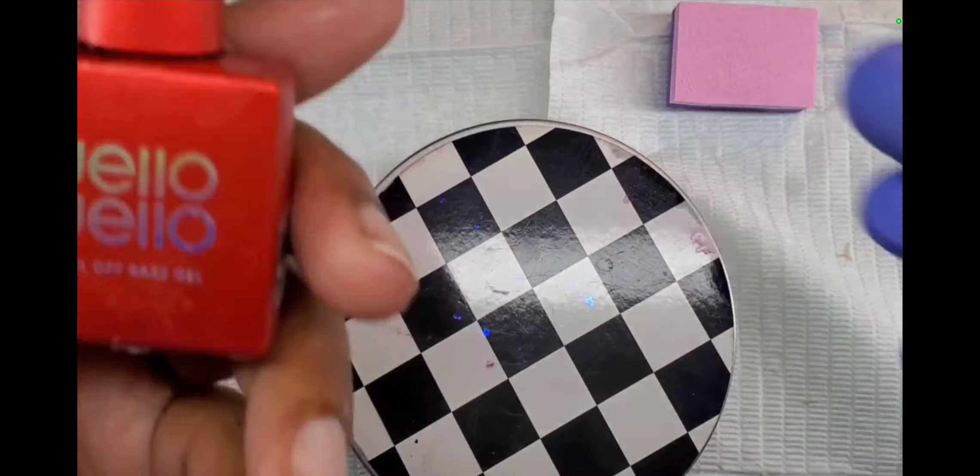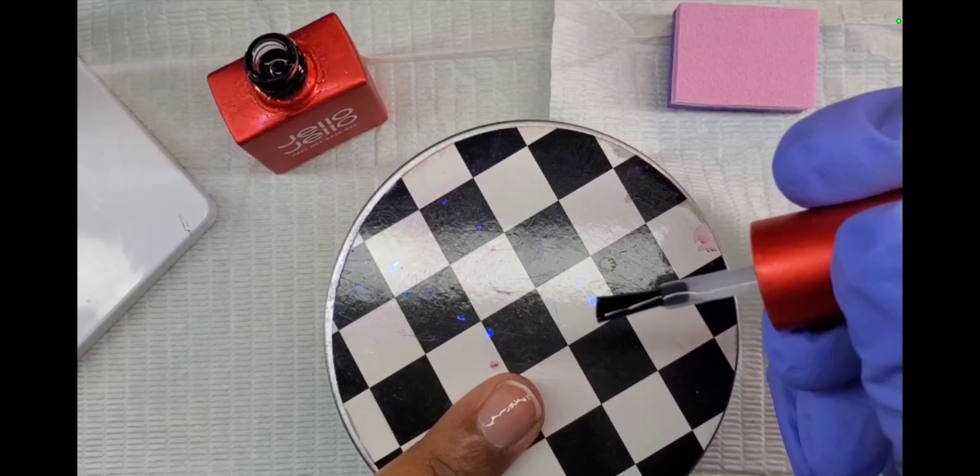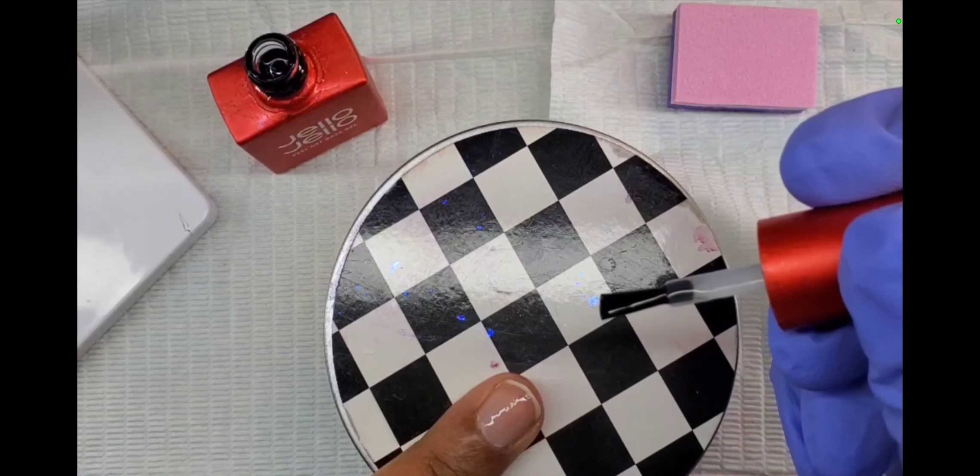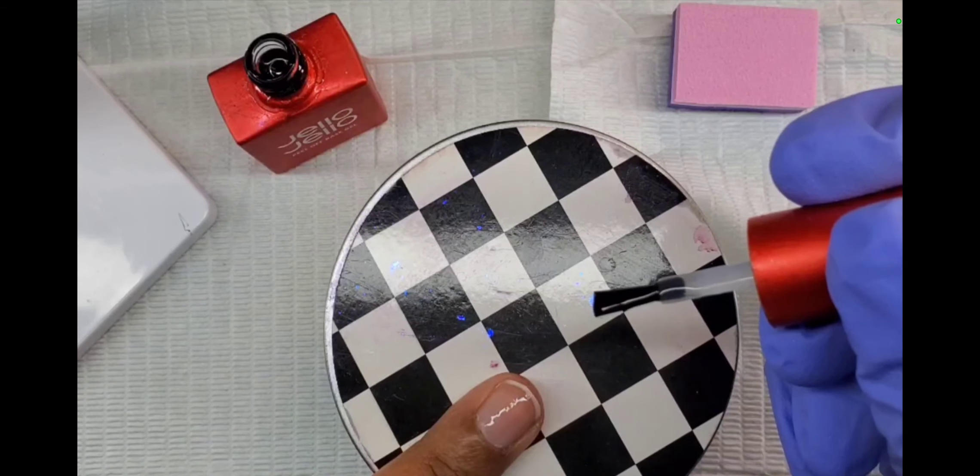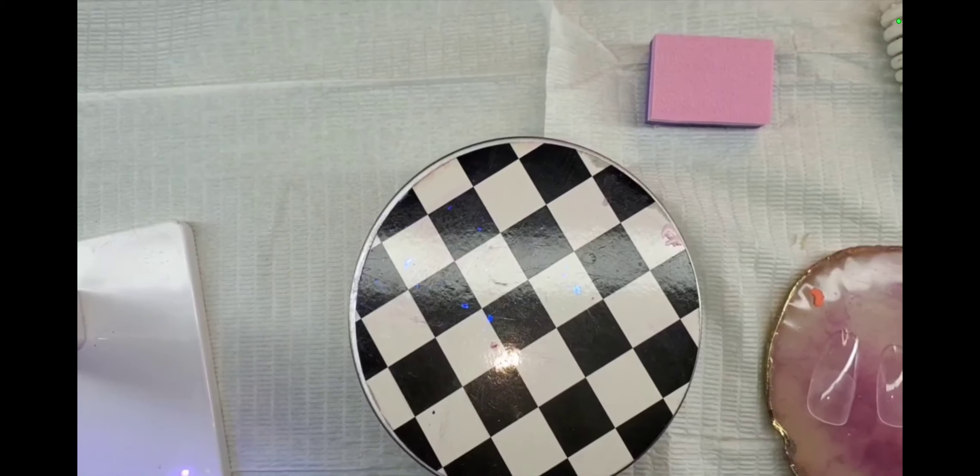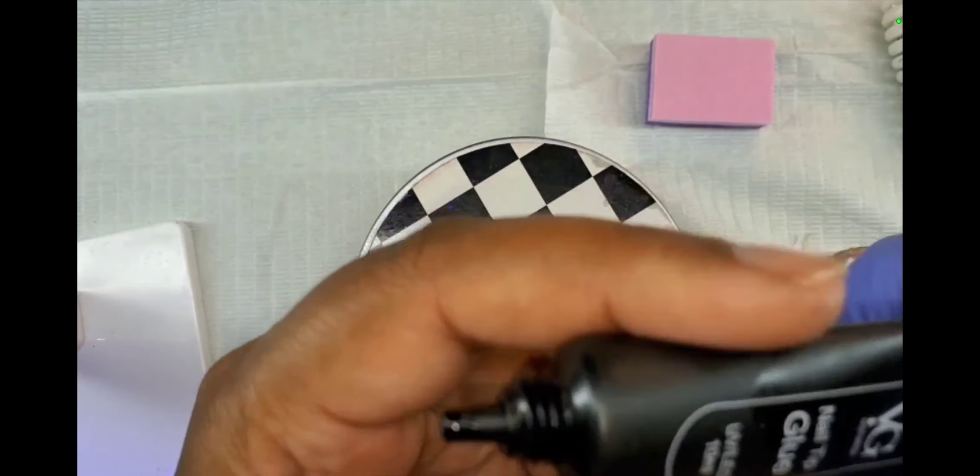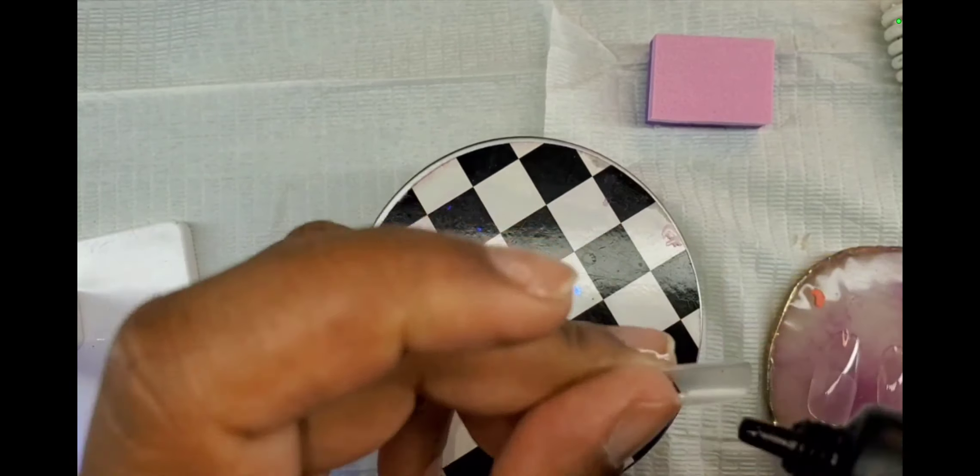I guess I got distracted here, really sorry about that. Definitely got distracted. And like I said I'm gonna cure it. And then we're just gonna get into putting the oval tips on. I've always wanted to try the oval ones I guess because they look a little more natural. But I was just very curious. I've never tried the oval shape.